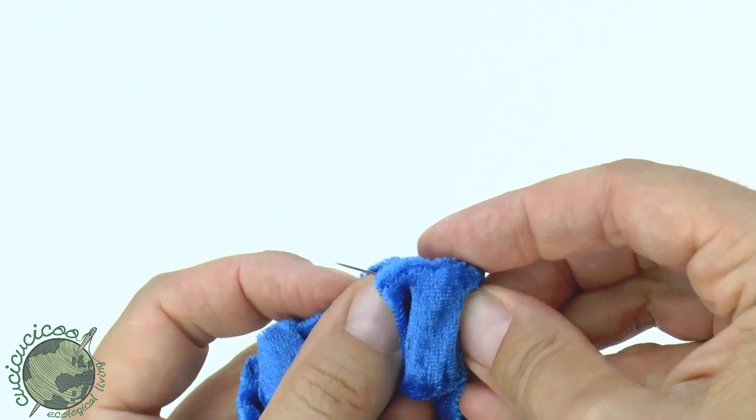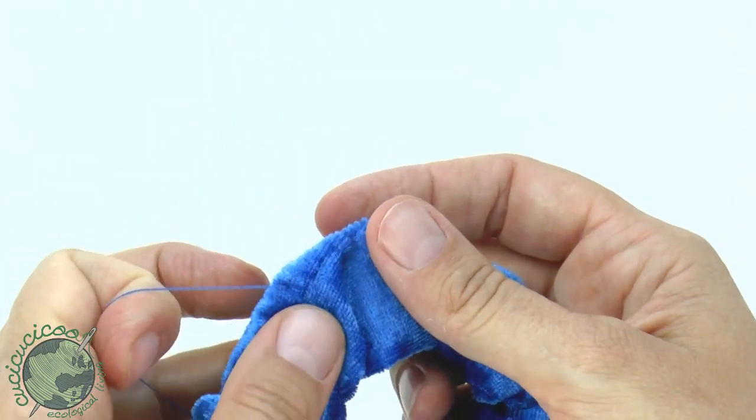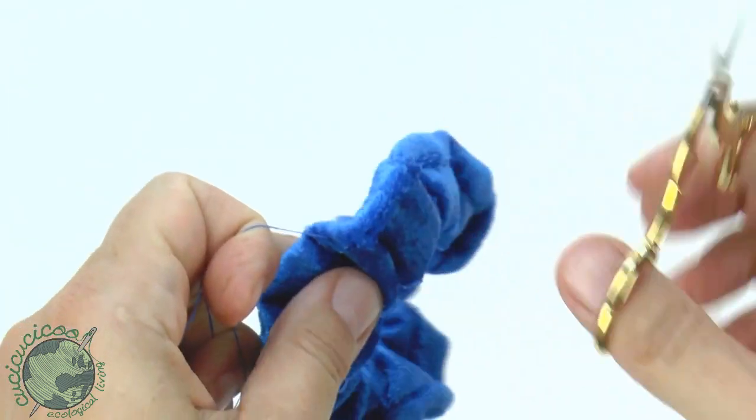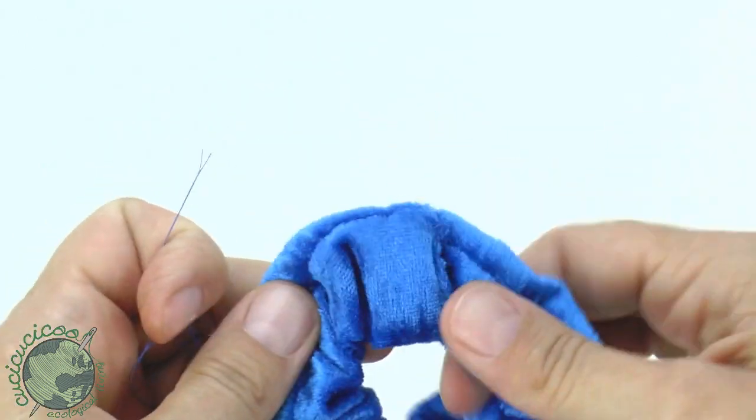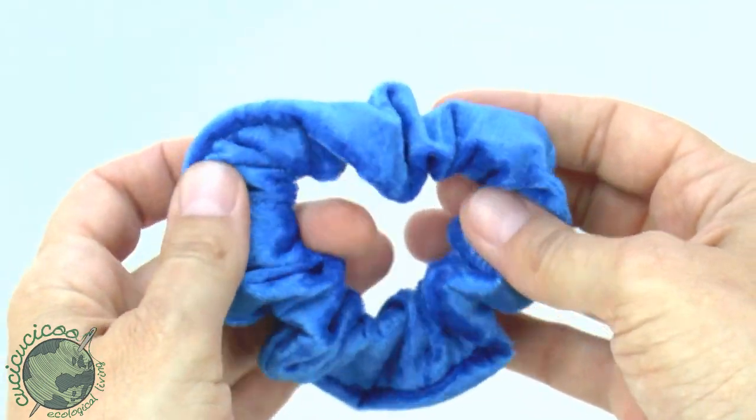Now to hide the edge of the thread, poke it through, pull it out somewhere else like that. Doesn't really matter where. Kind of pull it a little bit to pull out the end of the thread. Snip it. Then just kind of arrange your fabric. The end of the thread will go in and you're all done. There's your cool new scrunchie.